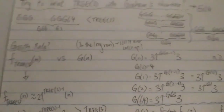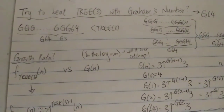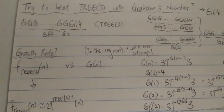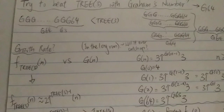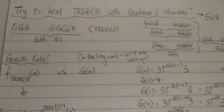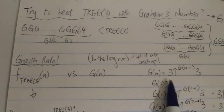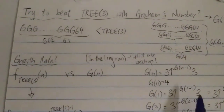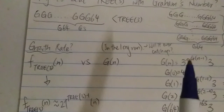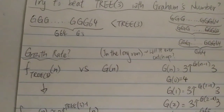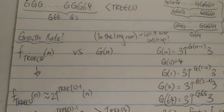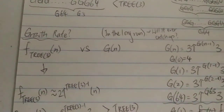But again, a lot of people are interested in trying to beat 3↑↑↑3 with Graham's number, so this time we're gonna try something different. We're not going to compare the size this time. Instead, we're gonna look at the growth rate. We're trying to beat 3↑↑↑3 using Graham's number at least in terms of the fast-growing hierarchy — not exactly the size, but the growth rate.